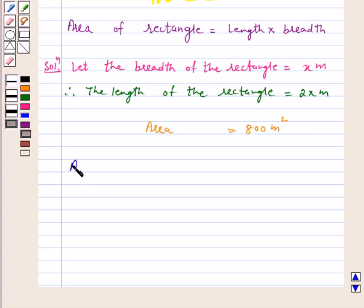Using the key idea, area of rectangle equals length times breadth. Therefore, 800 square meters equals 2x times x.